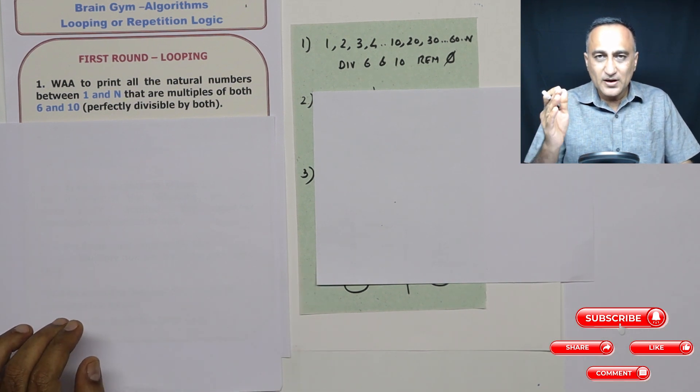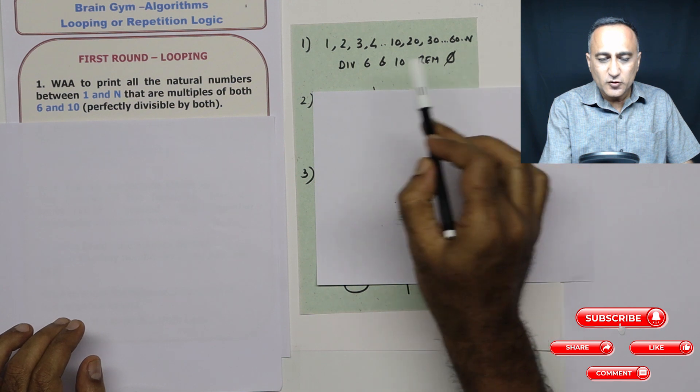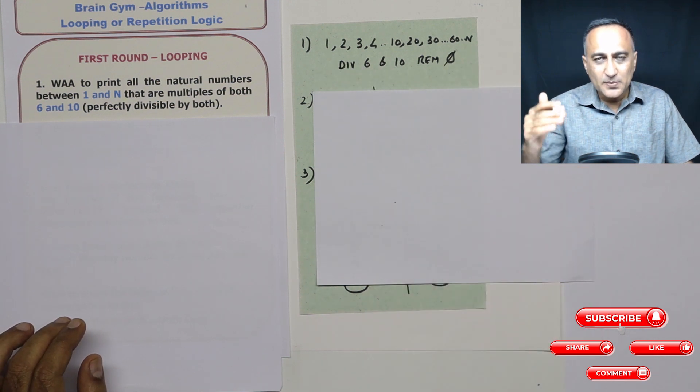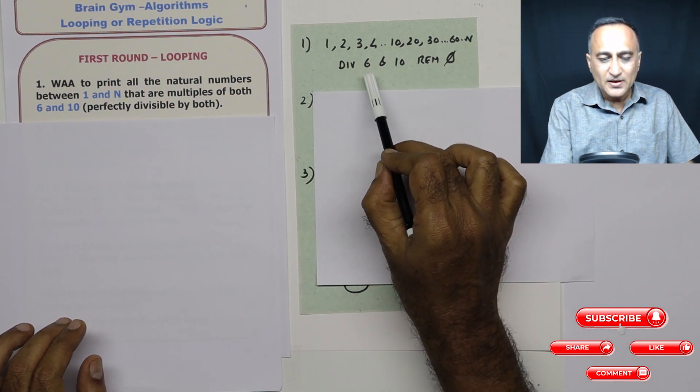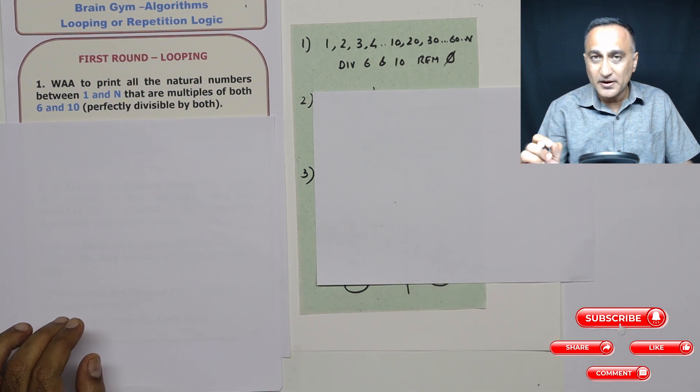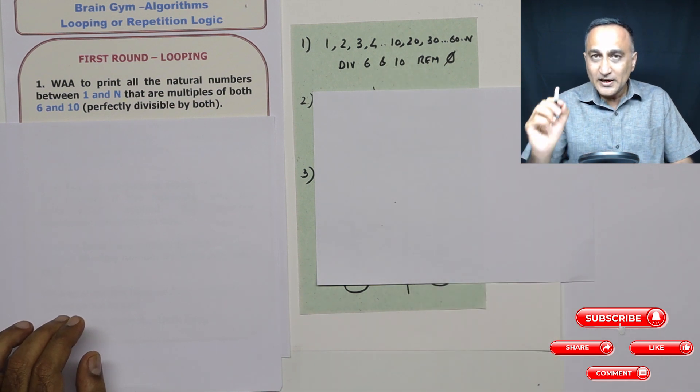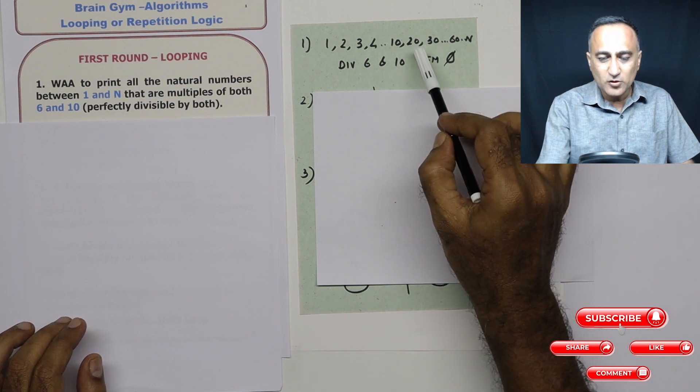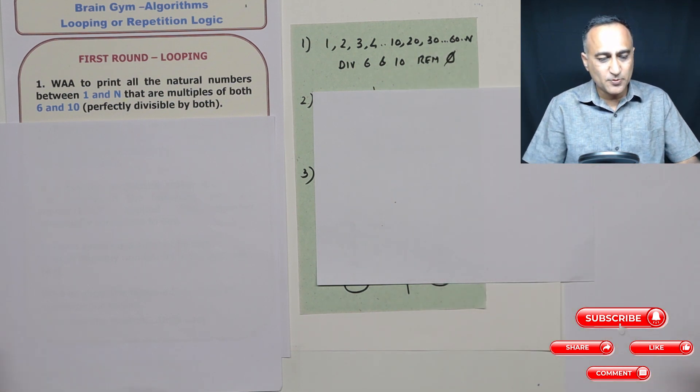So what will happen is user will give the end point. So starting from one, you will keep checking every number whether it is divisible by six and seven using the mod operator to find the remainder. If the remainder happens to be zero, then you will print such a number. That's problem number one.